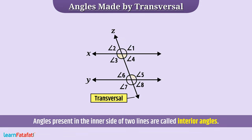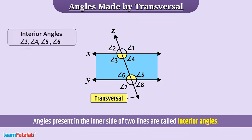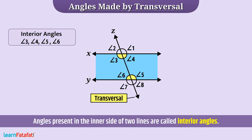Angles formed by a transversal that are present on the inner side of the two lines are called interior angles. Here, angle 3, angle 4, angle 5, and angle 6 are interior angles.